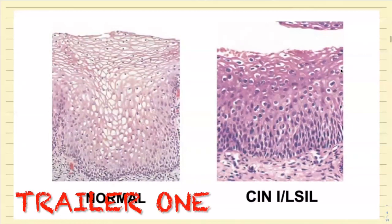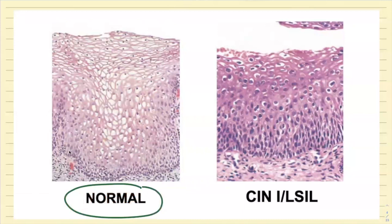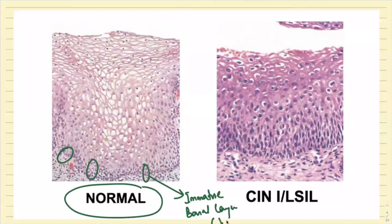This is the lesion I wanted to show you. This is the normal stratified squamous epithelium. This layer here is the immature basal layer — it is at this layer that virus entry will occur.